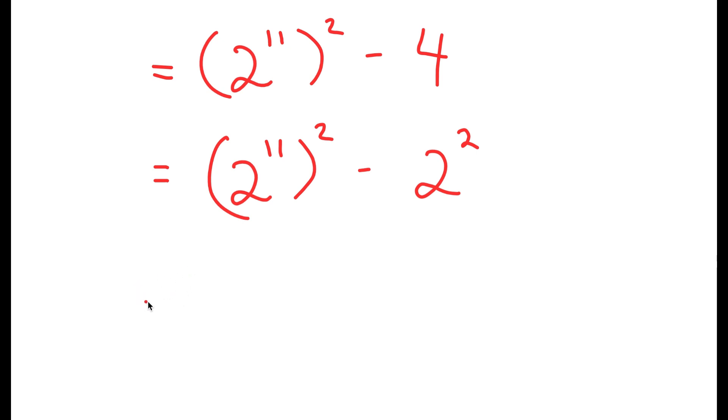Now, if I have something in the form a squared minus b squared, this is equal to a plus b times a minus b.